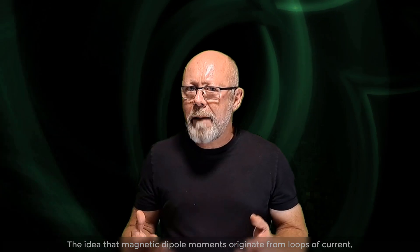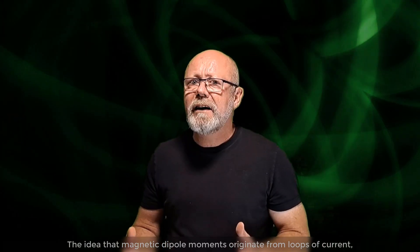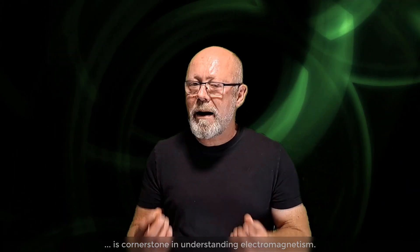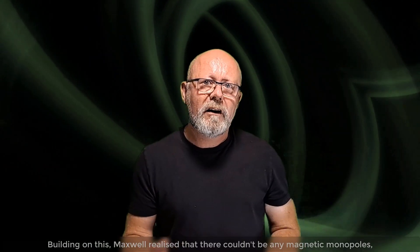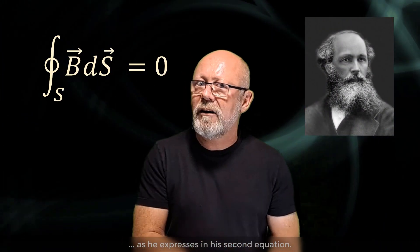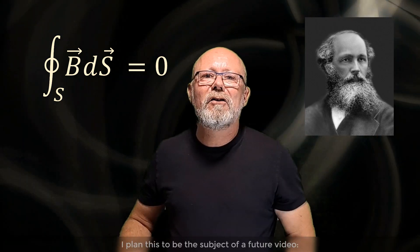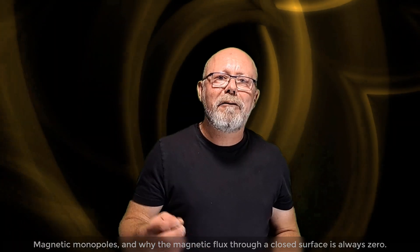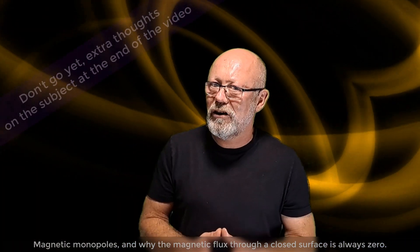This idea, that magnetic dipole moments originate from loops of currents, is cornerstone in understanding electromagnetism. Building on this, Maxwell realized that there couldn't be any magnetic monopoles, as he expresses in his second equation. I plan this to be the subject of a future video, magnetic monopoles, and why the magnetic flux through a closed surface is always zero.